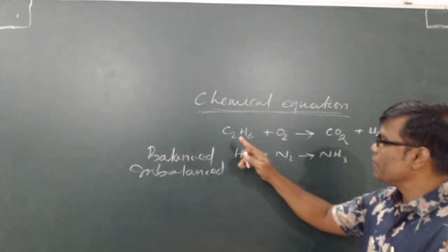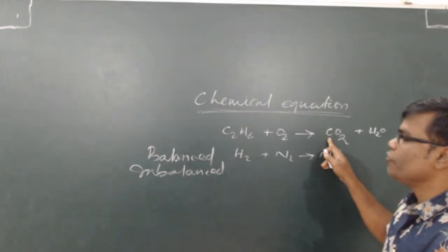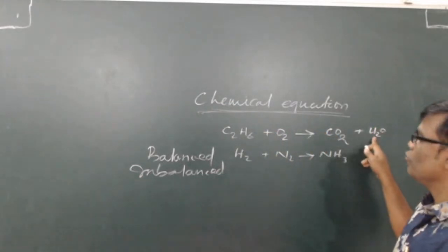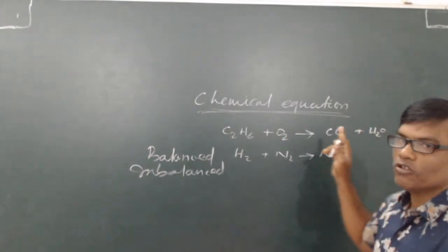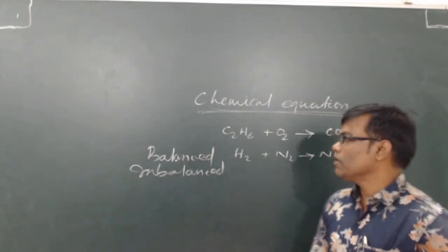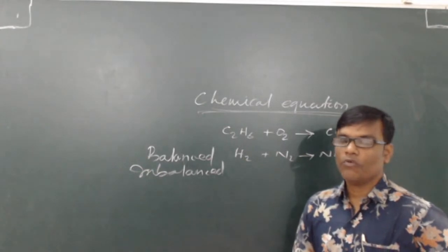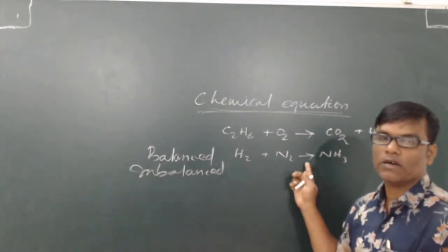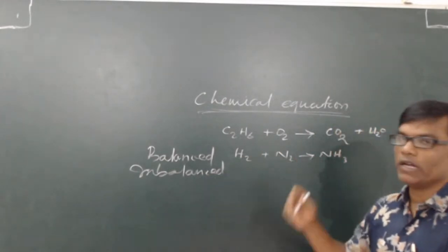If you see here, suppose carbon is two on one side and carbon is one on the other; hydrogen is six here and hydrogen is two there; oxygen two here and hydrogen is three there — so this is not balanced. When all the atoms on both sides are the same, then it is called a balanced chemical equation.